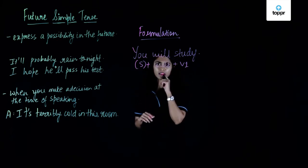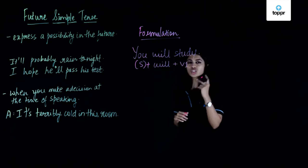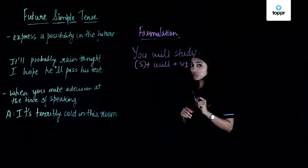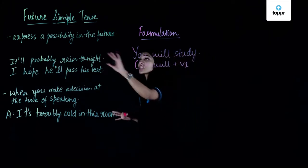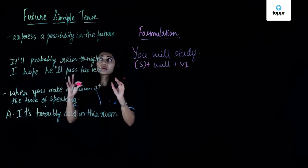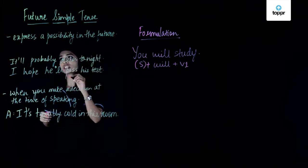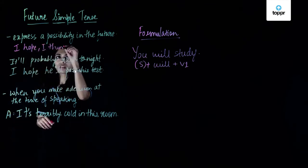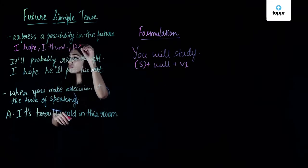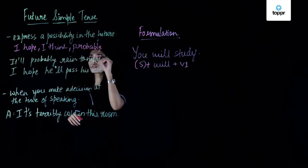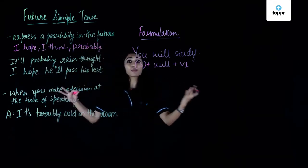If the formulation is that easy, could the usage be that easy too? Well, it is. There are just two basic uses of this tense. The first usage is it expresses a possibility in the future. Normally we do that using expressions like: 'I hope,' 'I think,' 'probably,' or 'possibly.' These expressions are used to express a future possibility.